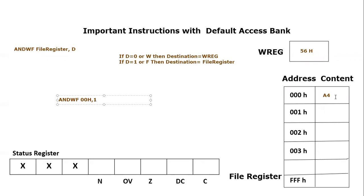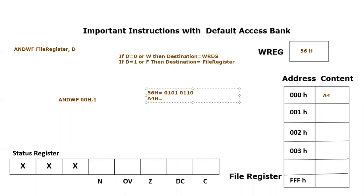We will perform the boolean AND operation between the file register content 00 hex and the working register content 56 hex. Converting 56 hex to binary: 5 is 0101 and 6 is 0110. The file register content is A4 hex: A is 1010 and 4 is 0100. We now perform the AND gate operation bit by bit: 0 AND 1 is 0, 1 AND 0 is 0, 0 AND 1 is 0, 1 AND 0 is 0, 0 AND 0 is 0, 1 AND 1 is 1, 1 AND 0 is 0, 0 AND 0 is 0.